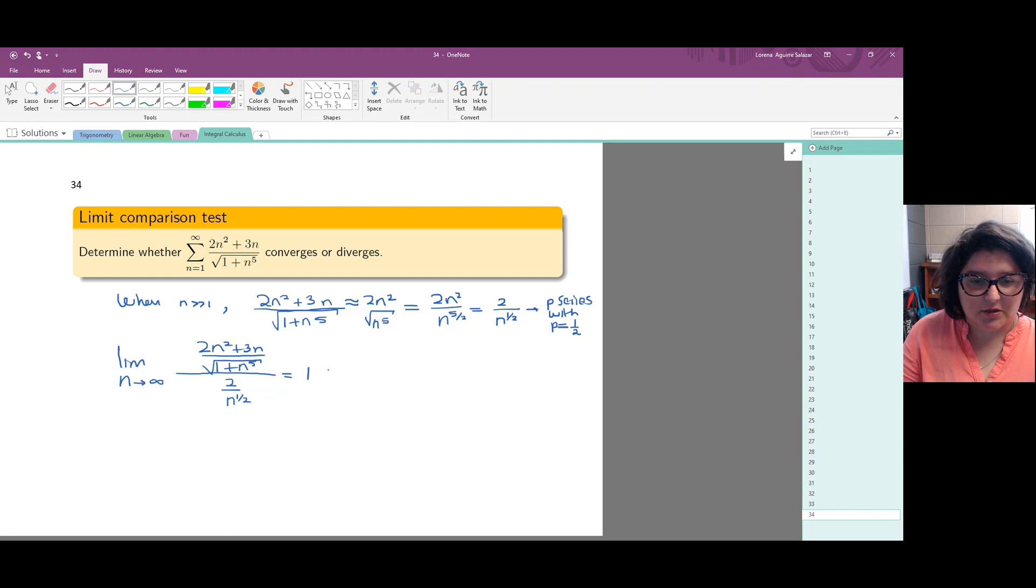So this number is actually a number that is strictly positive. It is finite. Then the limit comparison test tells us that both our series and the series that we get when we take this as the nth term converge or both of them diverge.